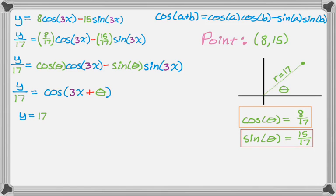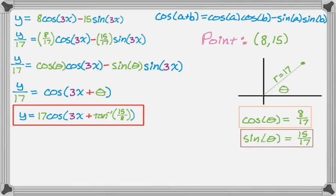And by doing this, I now know that y over 17 is just the cosine of 3x plus theta. And as a final step, I need to replace theta. But if you look at the picture, or if you think about it, theta is just the inverse tangent of 15 over 8. So you get that, and that's that.